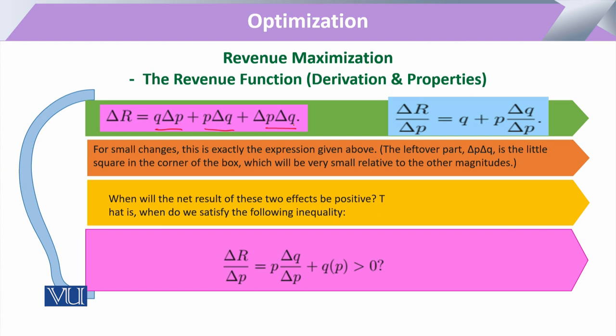When we calculate, we generally omit this ΔP × ΔQ term due to its small size, and we say that the small change in revenue equals only these two components: P × ΔQ and Q × ΔP.